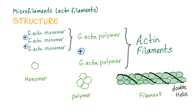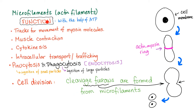What are the functions of actin filaments? We need the help of ATP — adenosine triphosphate — the energy currency of your cell. They provide tracks for movement, aid in muscle contraction, cytokinesis — which is cell movement — and intracellular transport or intracellular trafficking, not to be confused with human trafficking, which is evil.